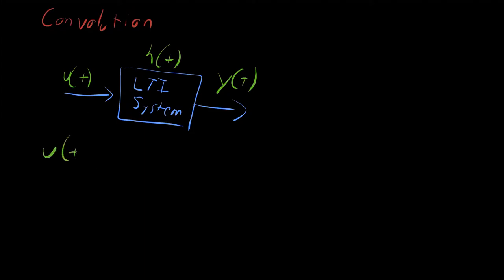That is taking u of t, convolving it, and the convolution is written with an asterisk, convolving it with the function h of t, and getting y of t.